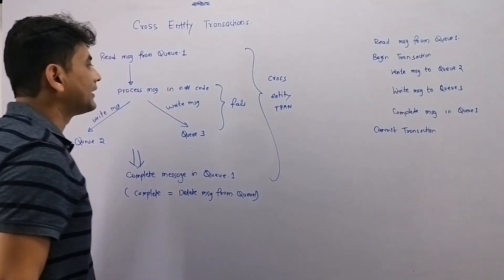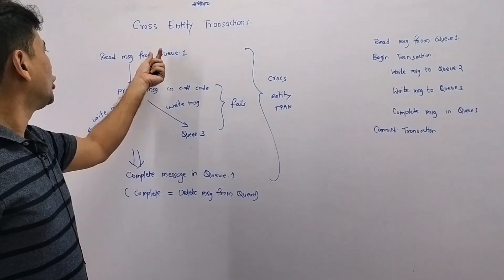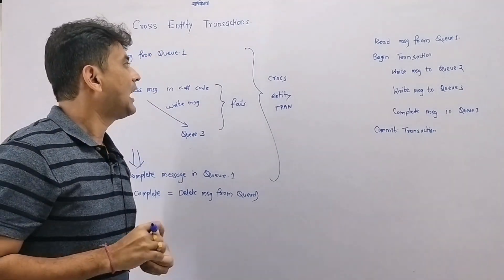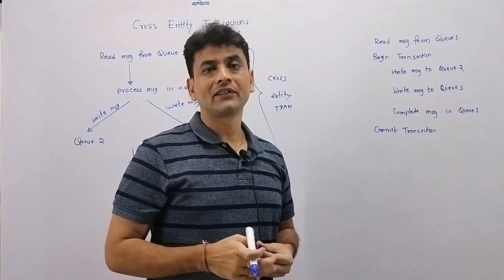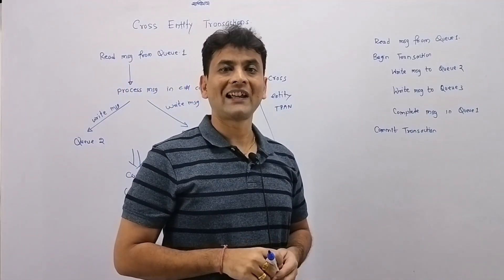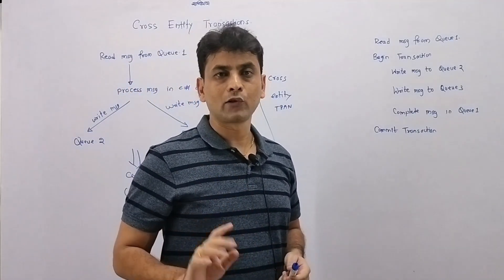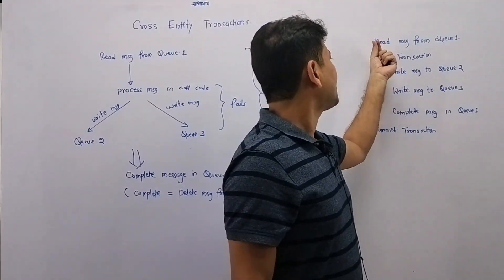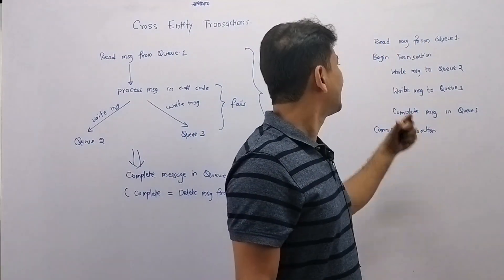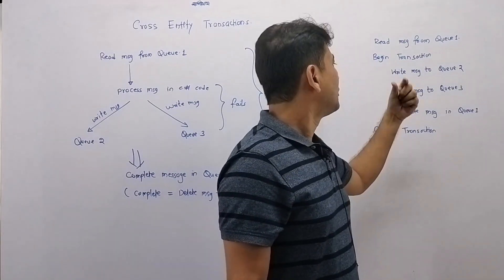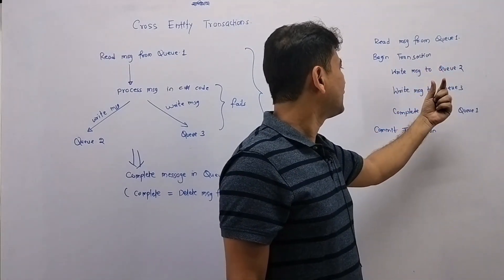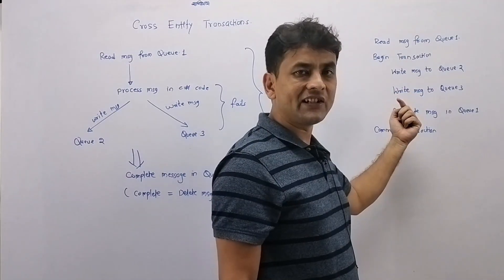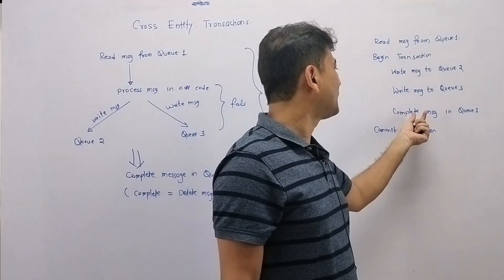Because there are multiple entities, Queue 1, Queue 2, Queue 3 - these are three entities over here. And how can we achieve this? It's similar to the transactions which we have in SQL Server. The process is we will first read the message from Queue 1, then we will begin that transaction, we'll write that message to Queue 2 then Queue 3, and only after message is written to Queue 2 and Queue 3 we will complete that message in Queue 1.